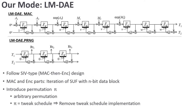LMDAE follows the SIV-type design — that is, it has a MAC-then-encrypt structure. The MAC part processes associated data A and plaintext M. Then using the tag from the MAC part, the encryption part generates a keystream to encrypt the plaintext. Each part is designed by iterating the state update function with n-bit data blocks. In LMDAE, a permutation PI is introduced in the lower part of each state update function. We can choose an arbitrary permutation, so choosing the tweak scheduling as the permutation, we don't need to implement the inverse of the tweak scheduling, which reduces implementation cost.